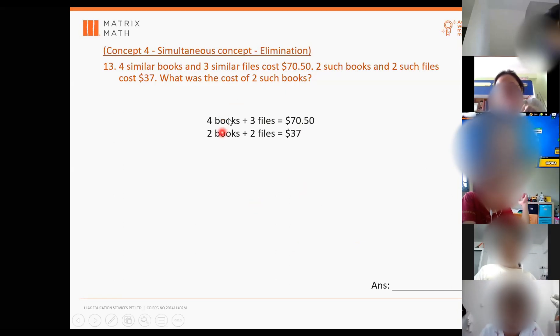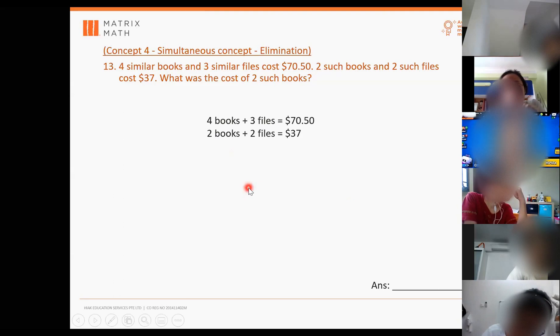But in this case, when I find the difference, can I get rid of any object first? No, you must go all the way down. You must get two books and one file. All right, you get two. Very good. Thanks, Aaron. You get two books and one file. So when you find the difference between these two, four minus two, you get two books. Three files minus two files, you get one file.